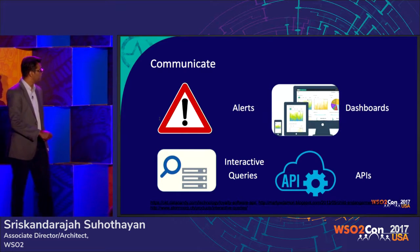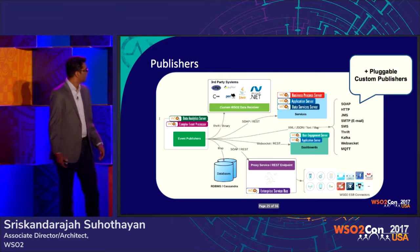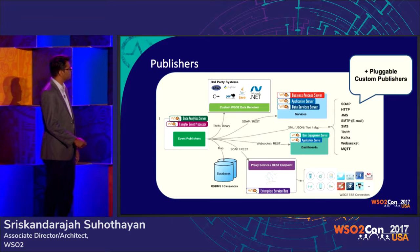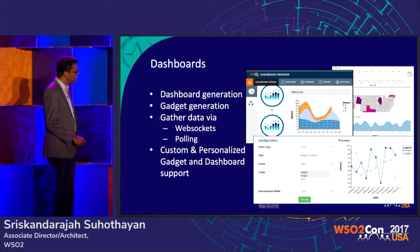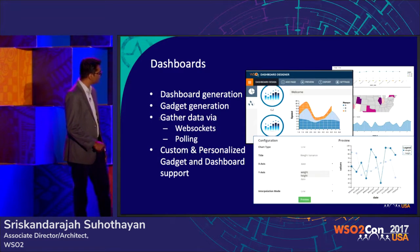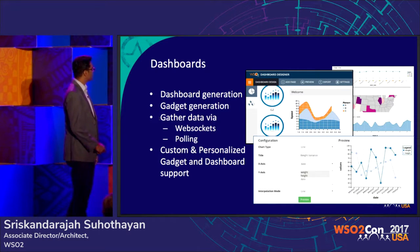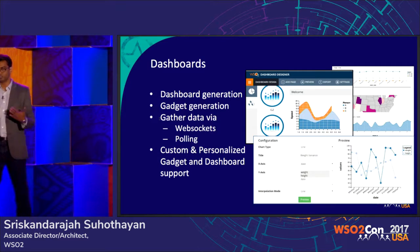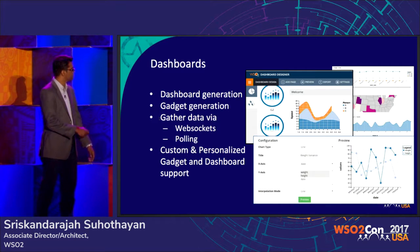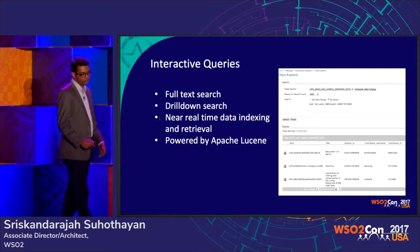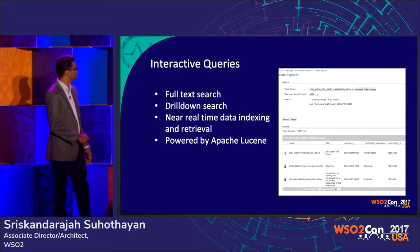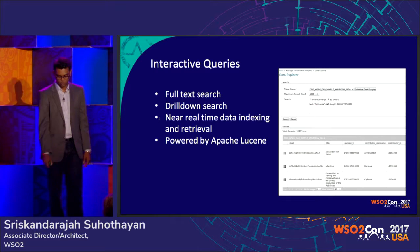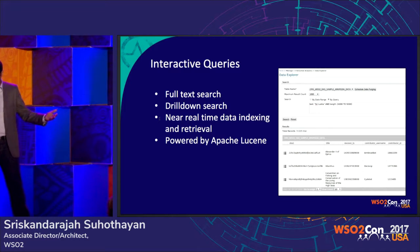For communication, we have alerts, dashboards, interactive queries, and APIs. On the publishing side, we support SOAP, HTTP, Kafka, Thrift, RabbitMQ, and through ESB we can send to social media channels. We can also store results into a database or NoSQL store. We have rich dashboards with gadget generation, WebSocket and polling capabilities, roles-based security, and full-text search, drill-down search, and near real-time indexing and retrieval using Apache Lucene.